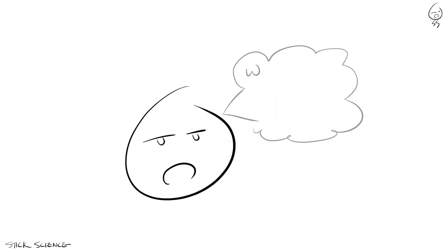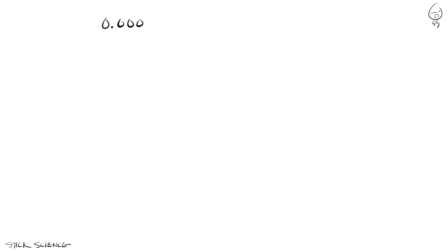Small numbers written in decimals can be converted using the same principle, only in reverse. Let's say we have the number 0.0000000567. Just as before, we need to move the decimal point without changing the value. Only this time, we want to move it right, since we want it to end up right after the first non-zero digit, 5. In order to accomplish this, we employ the same trick as before.